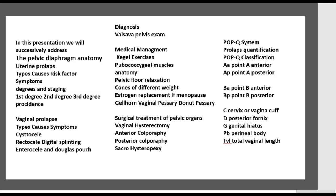In this presentation, we will address: pelvic diaphragmatic anatomy; uterine prolapse — type, cause, risk factors, symptoms, degree, and staging; vaginal prolapse — type, cause, symptoms, cystocele, rectocele, and enterocele; the diagnosis using Valsalva pelvic exam; medical management including Kegel exercise, pelvic floor relaxation, and estrogen replacement; surgical treatment including vaginal hysterectomy, anterior colporrhaphy, posterior colporrhaphy, and sacro-hysteropexy; and the POPQ system for prolapse quantification and classification.